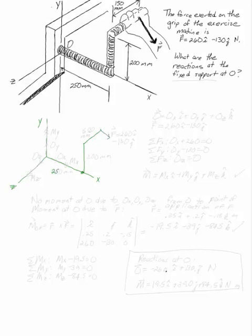What's crucial here are only really the distances and the location of the point F. So I'm going to say that this is 250 millimeters out, 200 millimeters up, and 150 millimeters back. And this is where my F acts. This is 260i minus 130j.